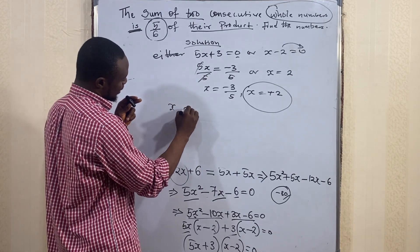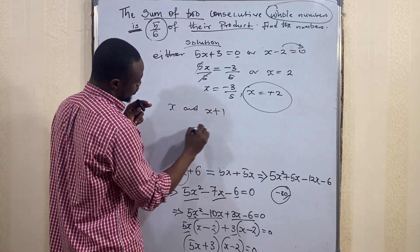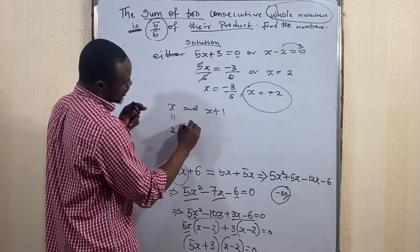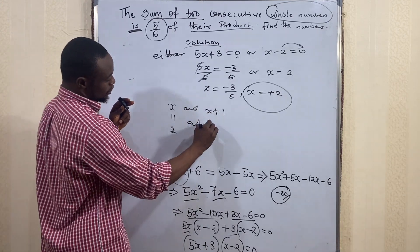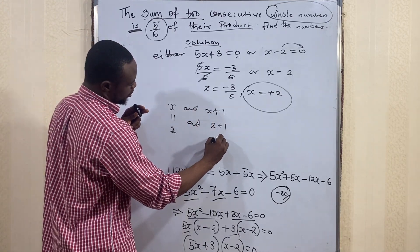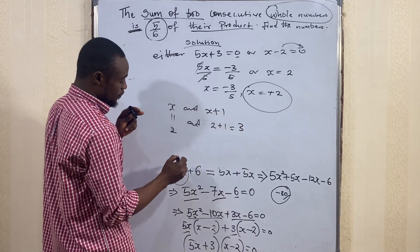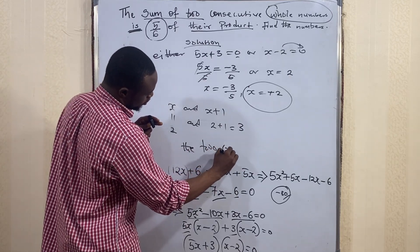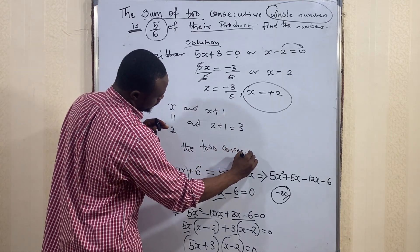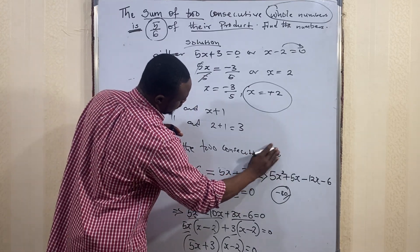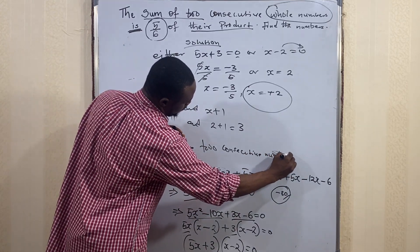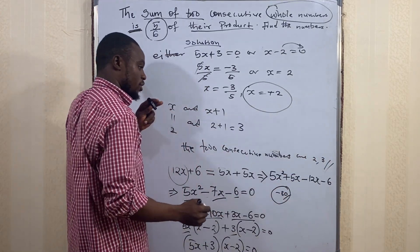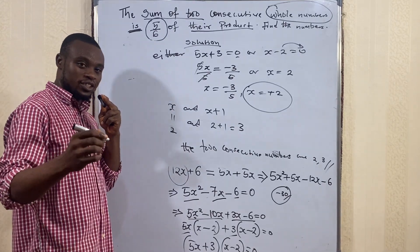Our consecutive numbers are x and (x + 1). With x = 2, the first number is 2 and x + 1 = 2 + 1 = 3. Therefore the two consecutive whole numbers are 2 and 3. Thank you for watching and see you in the next video.